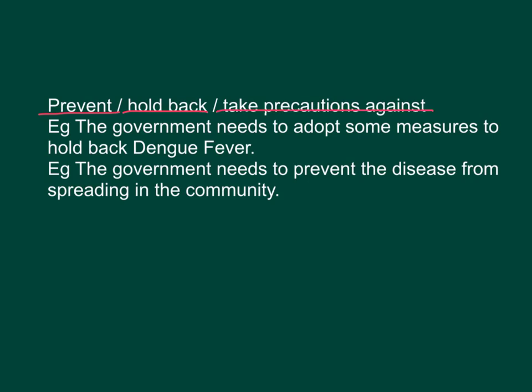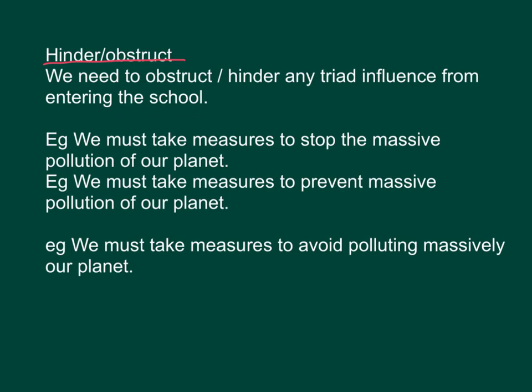For example with 'hold back' and 'prevent': The government needs to adopt some measures to hold back dengue fever. The government needs to prevent the disease from spreading in the community. Hinder, obstruct: We need to obstruct or hinder any child influence from entering the school. We must take measures to stop the massive pollution of our planet. We must take measures to prevent massive pollution of our planet. We must take measures to avoid polluting our planet massively.